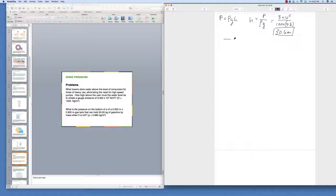Now let's take a look at this second question. What is the pressure on the bottom of a 0.5 by 0.9 gas tank that holds 50 kilograms of gasoline by mass when it is full? And the density of gasoline is 0.68 kilograms per meter cubed.